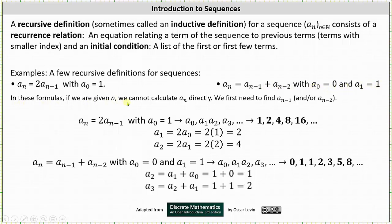In these formulas, given n we cannot calculate a sub n directly — we need to first find a sub (n minus one) or possibly a sub (n minus two), meaning we need previous terms first. For a sub n equals two times a sub (n minus one) with a sub zero equals one: we know a sub zero is one. To find a sub one, n minus one is zero, so a sub one equals two times a sub zero, which is two. To find a sub two, a sub two equals two times a sub one, which is two times two, or four. So each term is the previous term multiplied by two.